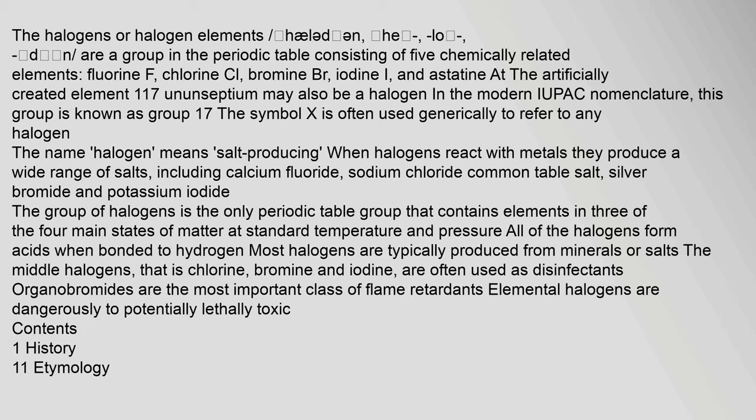Most halogens are typically produced from minerals or salts. The middle halogens — that is, chlorine, bromine, and iodine — are often used as disinfectants. Organobromides are the most important class of flame retardants. Elemental halogens are dangerously to potentially lethally toxic.